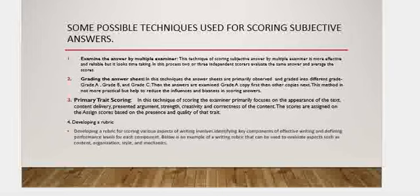Below is an example of a writing rubric that can be used to evaluate aspects such as content, organization, style, and mechanics. This rubric is really helpful for the examiner to establish criteria for evaluation. The rubric is made in a table format with criteria columns including Excellent, Good, Satisfactory, and Needs Improvement.